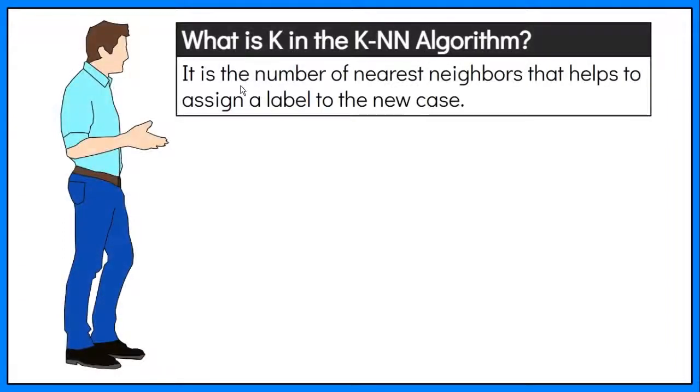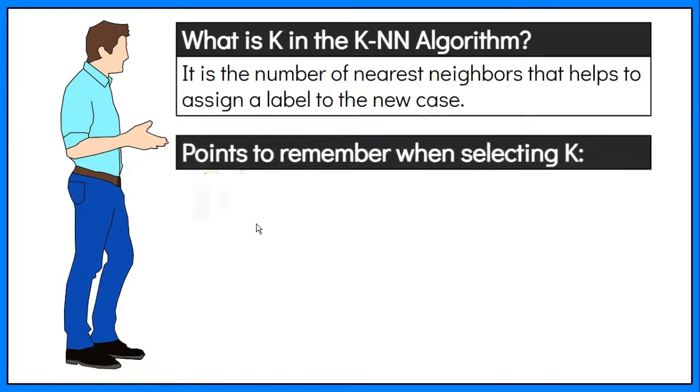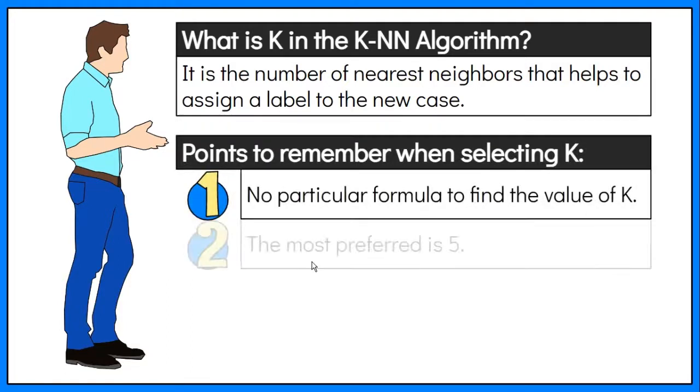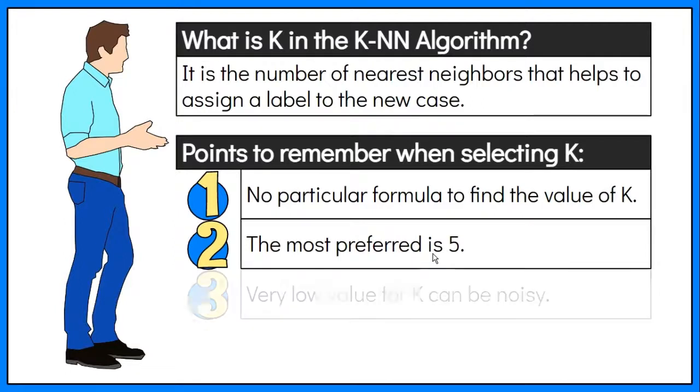What is K in the KNN algorithm? K is the number of nearest neighbors that helps to assign a label to the new case. There is no particular formula to find the value of K, although the most preferred is 5.